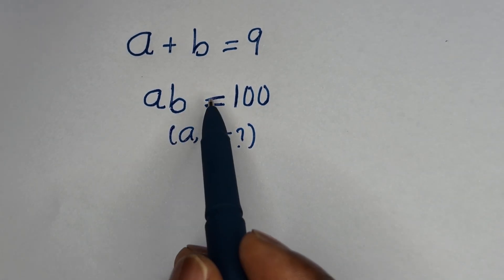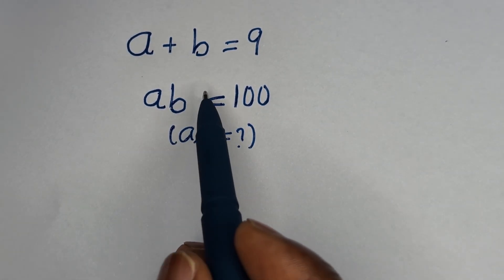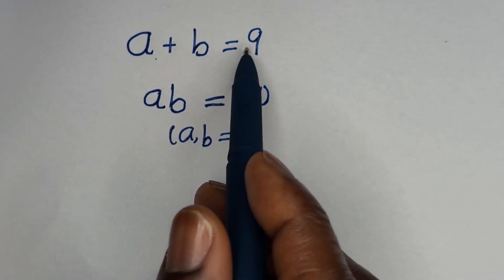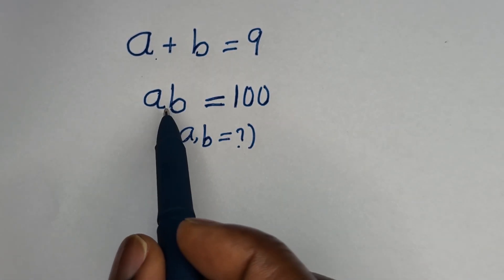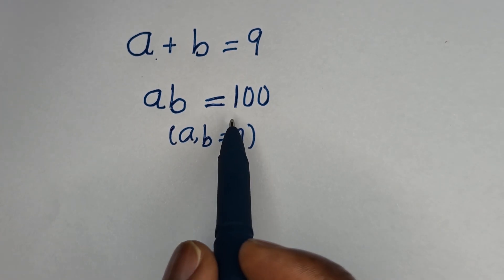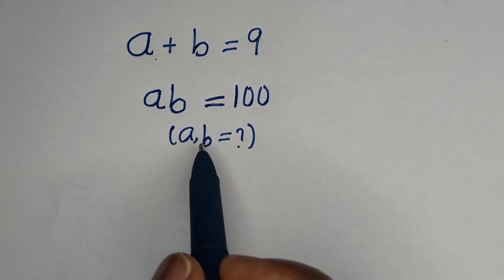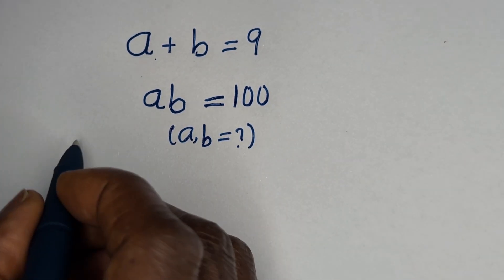Hello, you are welcome to solve this nice math problem. A plus B is equal to 9. AB is equal to 100. We want to find the value of A and B.